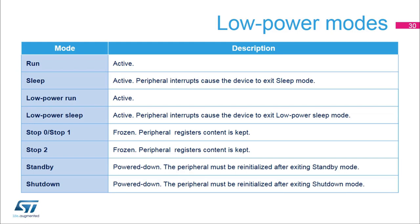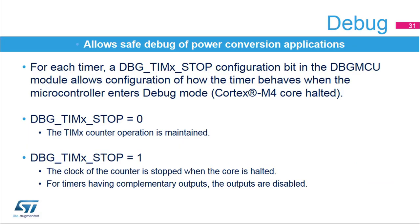The timer is active in any of the run and sleep modes, while it is frozen in stop mode. The timer state and register content are preserved, and the timer directly resumes operation when the MCU is awakened. In standby and shutdown modes, the timer is powered down and must be completely re-initialized when exiting from these modes. The timer's state in debug mode can be configured with one configuration bit per timer. If the debug bit is set, the timer clock is maintained during a break point. If the debug bit is set, the timer's counter is stopped as soon as the core is halted. Additionally, the outputs of timers having complementary outputs are disabled and forced to an inactive state, preventing power stages from being damaged or motors left in an uncontrolled state when hitting a break point.